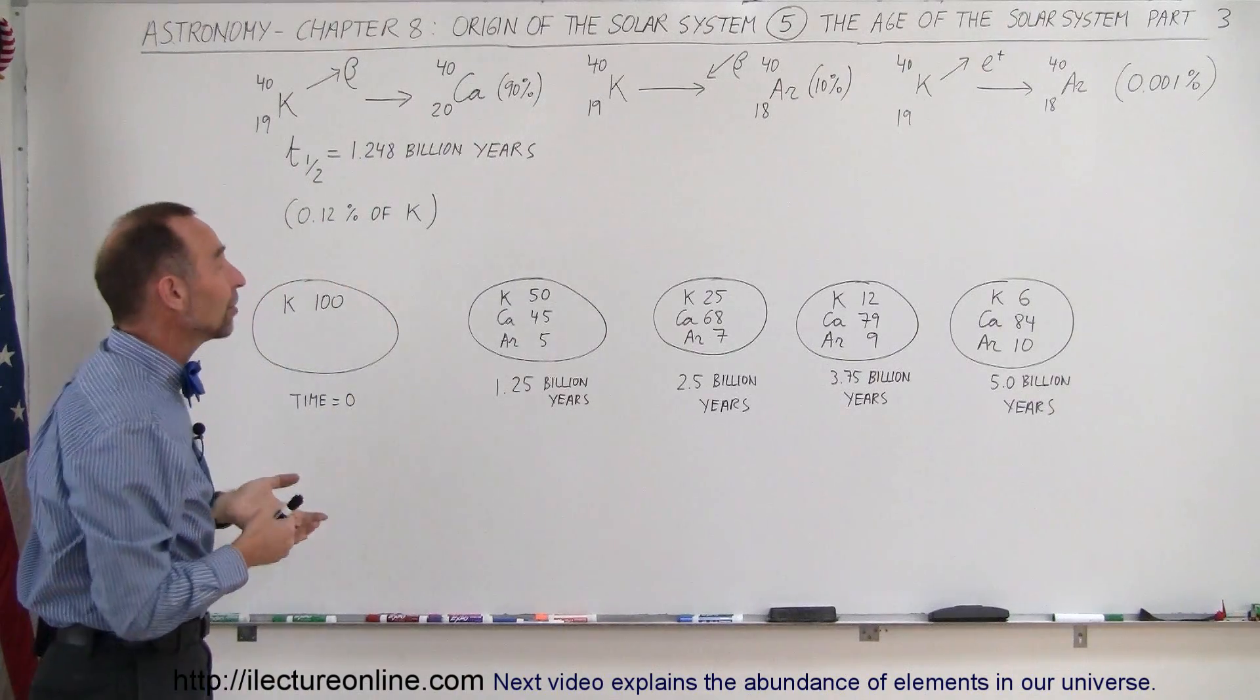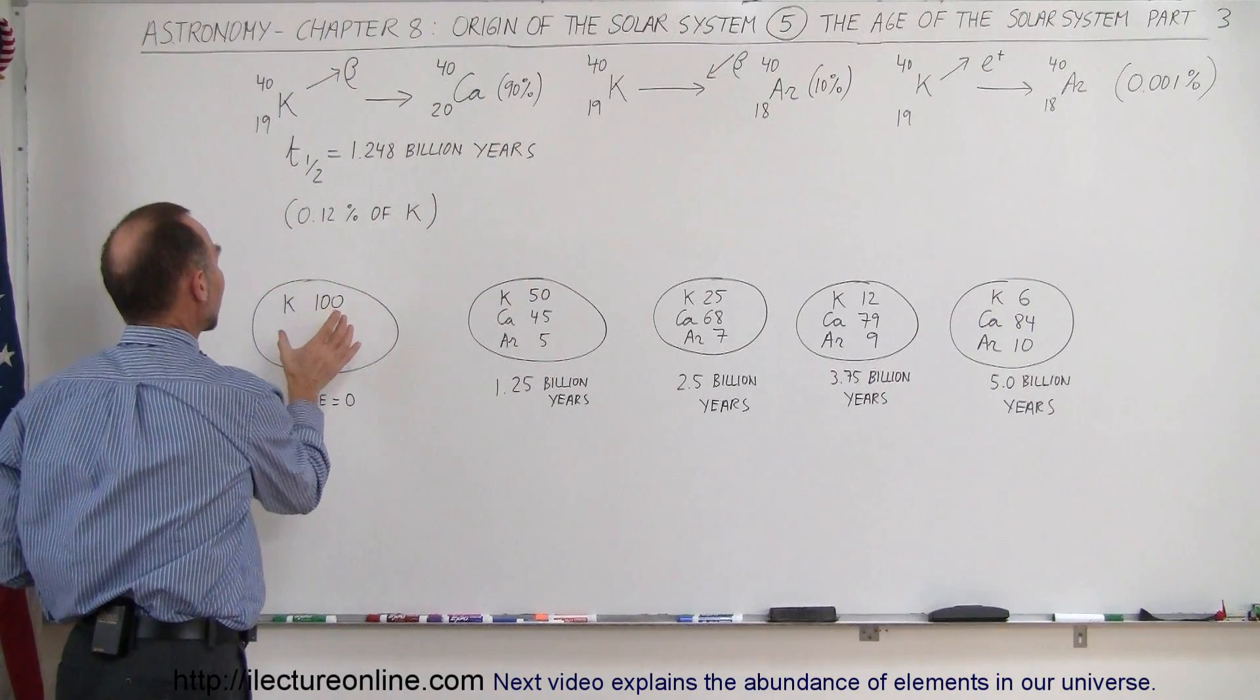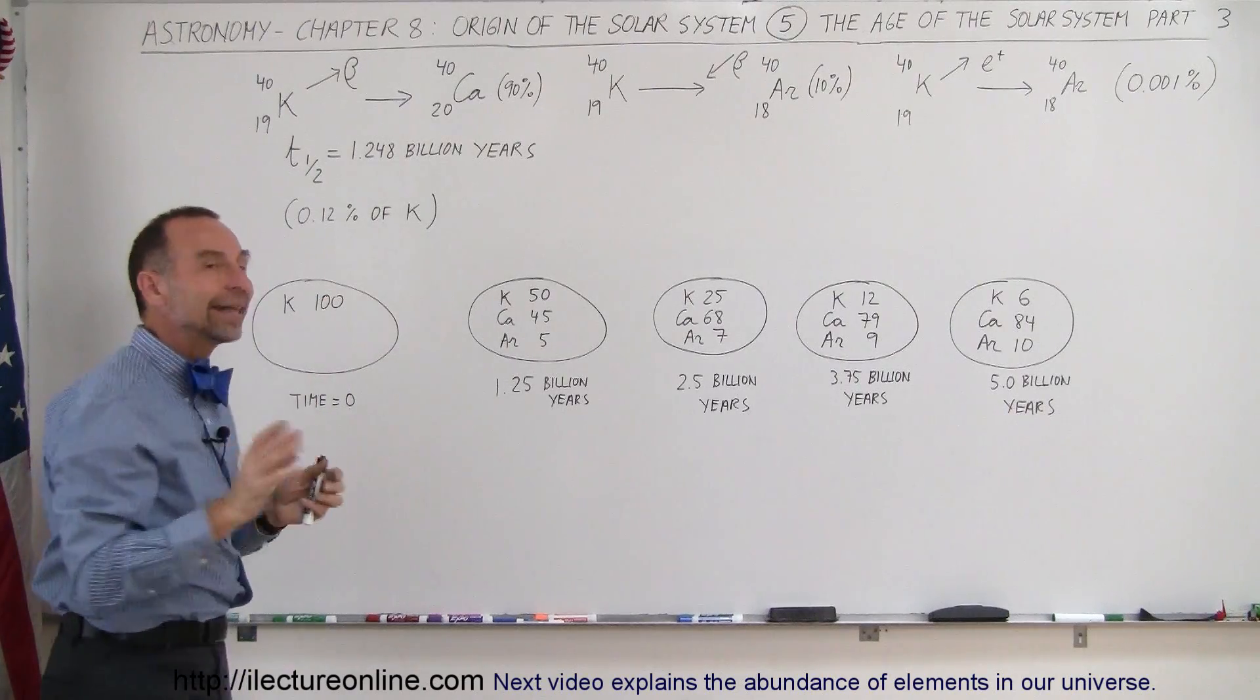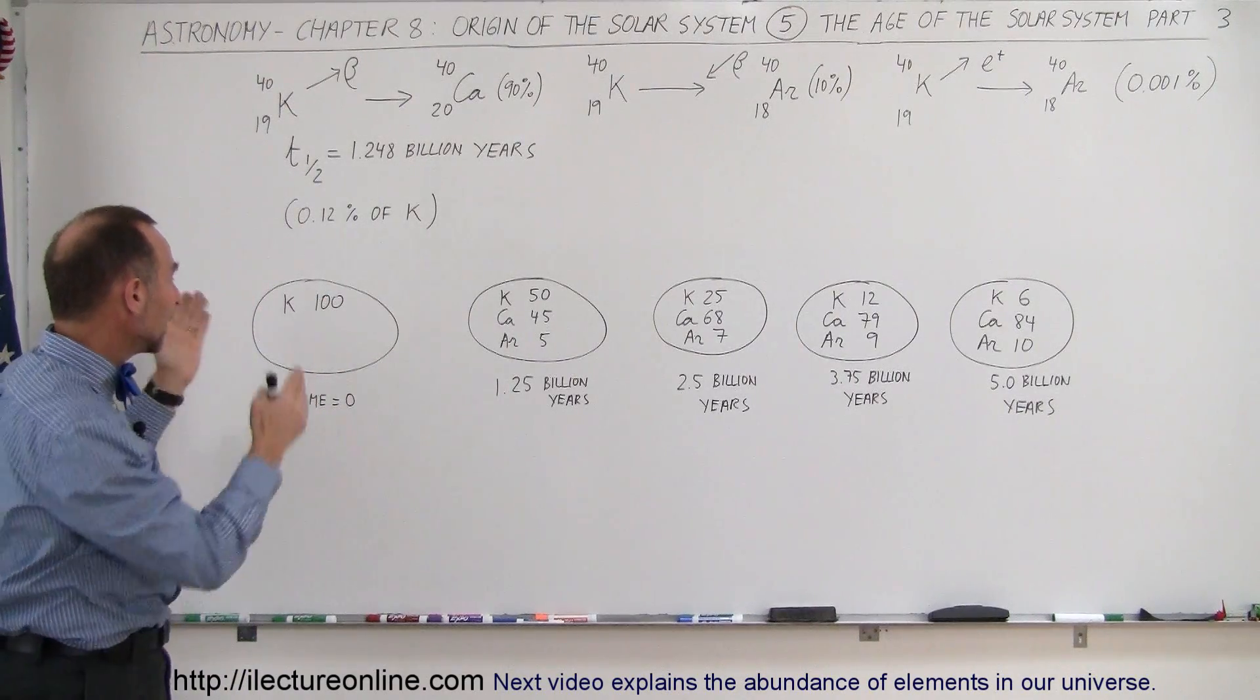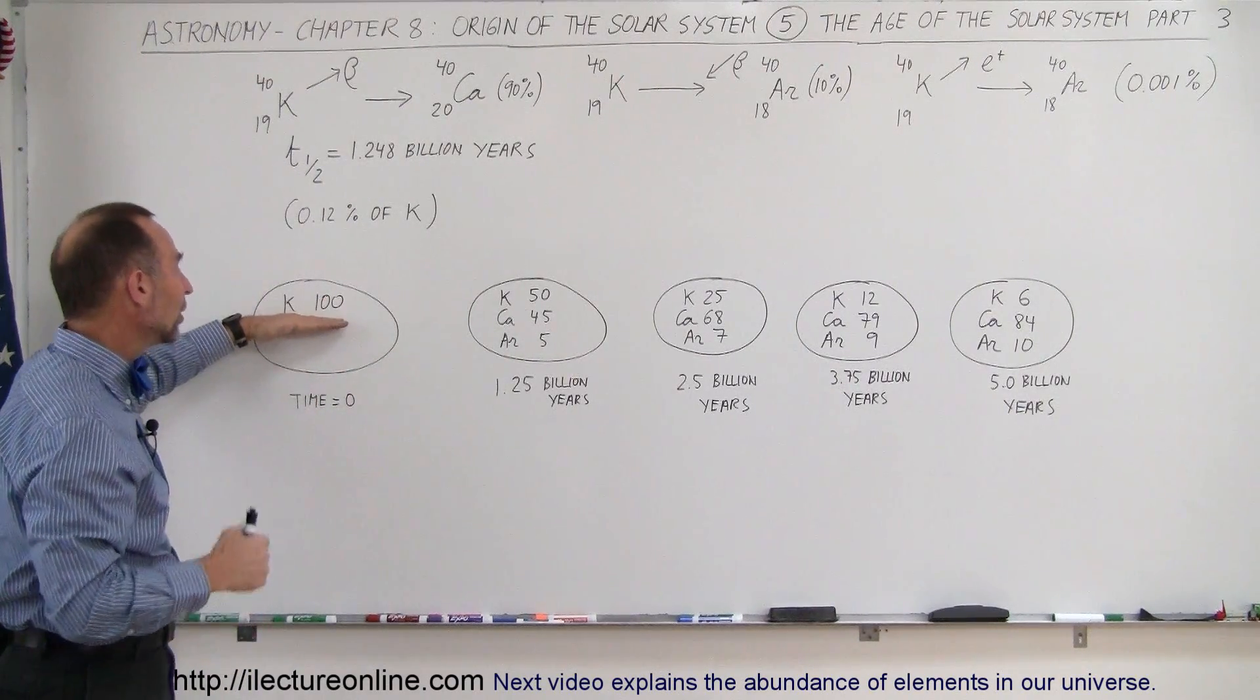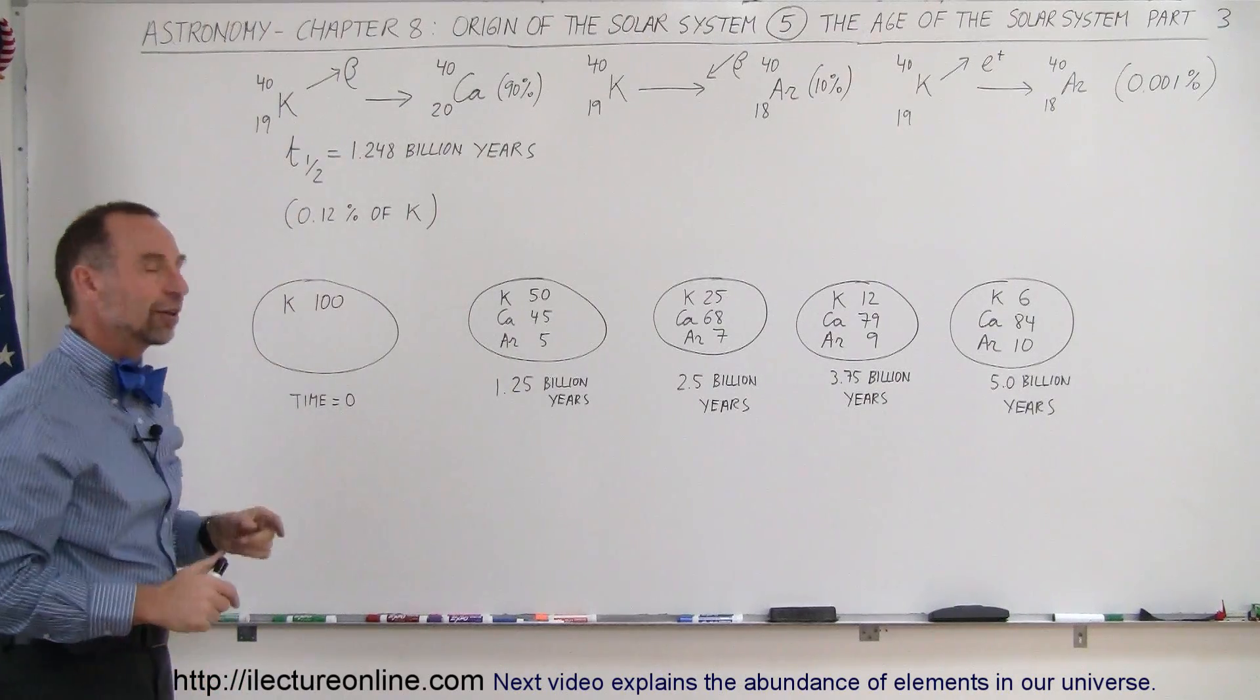All right, so graphically, what happens? Let's say we find a rock and all of the potassium has not yet decayed. So when the rock is formed and it has potassium in it, it has 100% of the radioactive potassium.